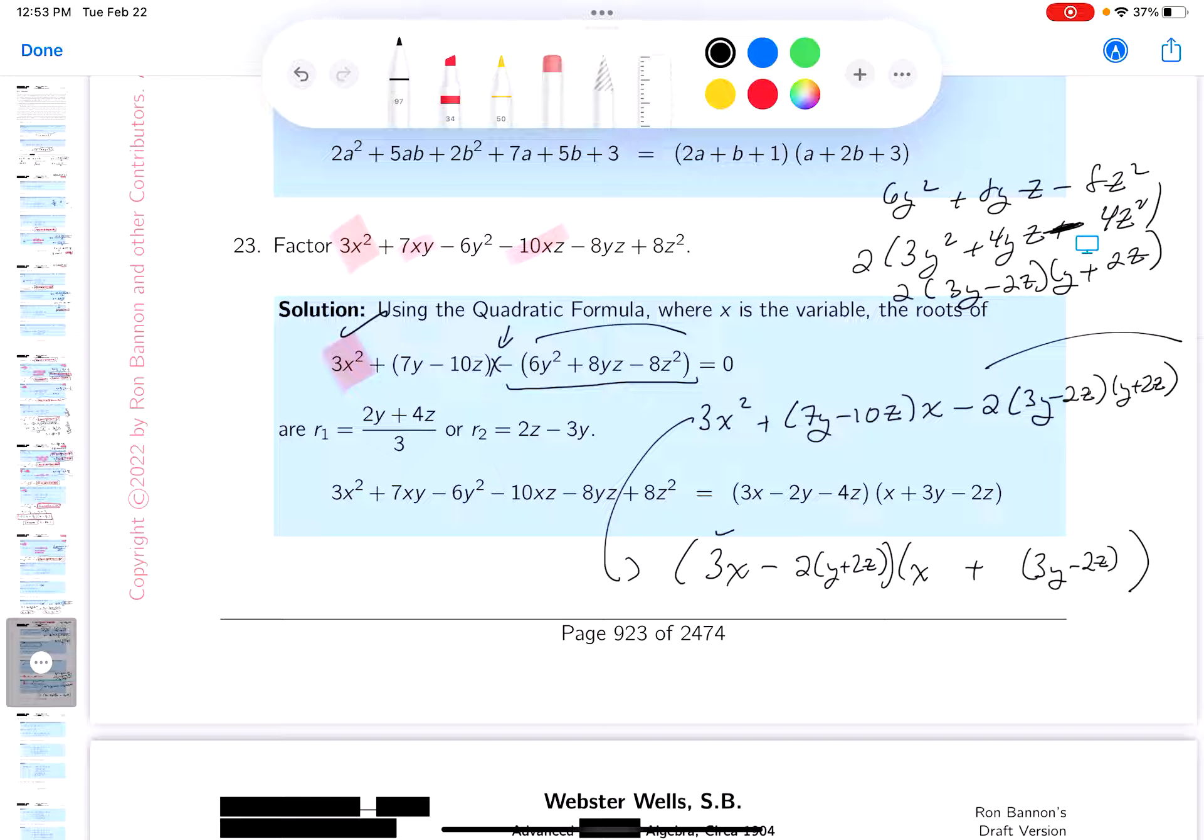So I got to do it. I got to do the 3 times this thing, which is 9y minus 6z, and then it's going to be minus 2y minus 4z. And what's that going to give you? 7y minus 10z. Is that what they said it's going to be? Yeah, this is working out for me.